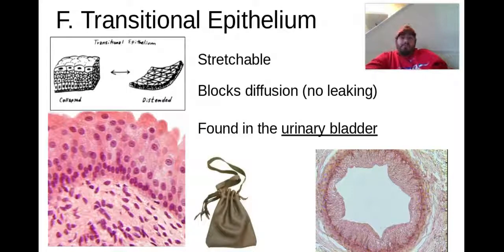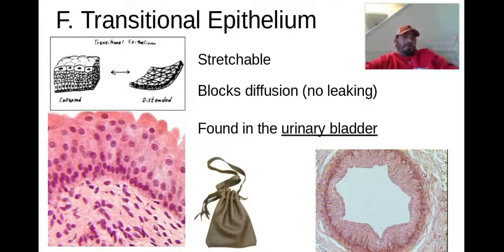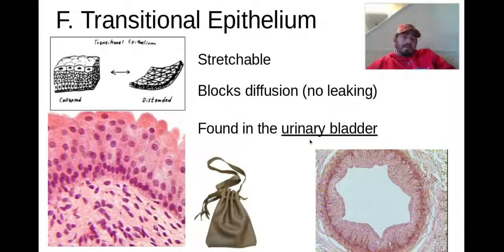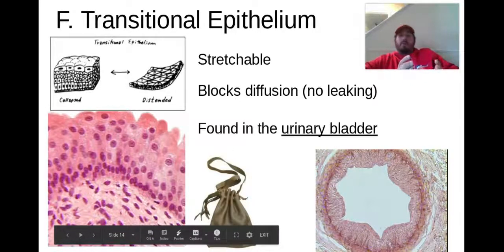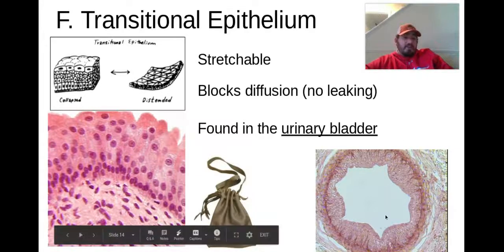Then we have transitional epithelium. These form really tight junctions — think waterproof or liquid-proof. They block diffusion, keeping water from moving in and out, and they're actually really stretchable. The key location for transitional epithelium is the urinary bladder. The bladder is the sac that holds urine before we dispel it through urination. We don't want urine leaking into our body, and we don't want excess water going into the bladder. These transitional epithelium cells form tight junctions so we can fill it with urine and then release it.